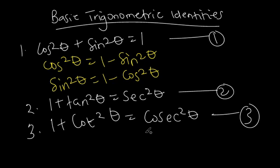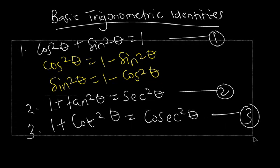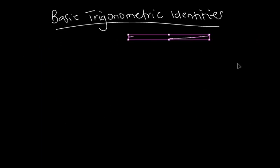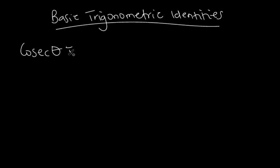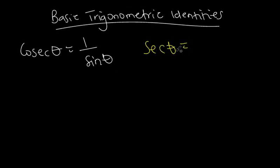At this point I'm assuming you already have an idea of the basic trigonometric identities — what sin theta, tan theta, and the rest are. But just for revision, let's go through a few of them. Cosec theta is equal to one over sin theta, so if you have cosec theta you can substitute one over sin theta for it. Sec theta is equal to one over cos theta — another substitution that can be very useful when solving questions.